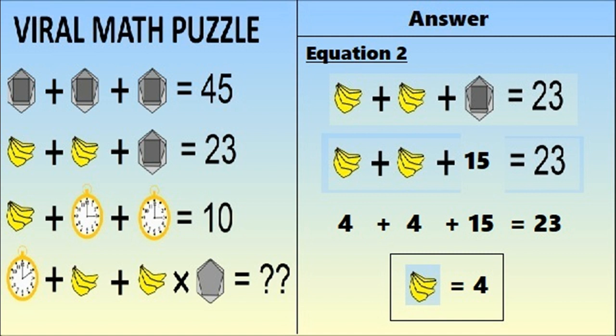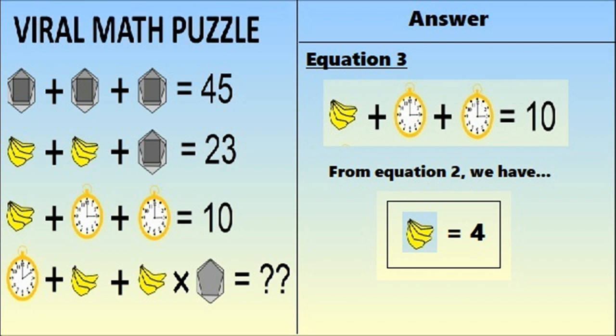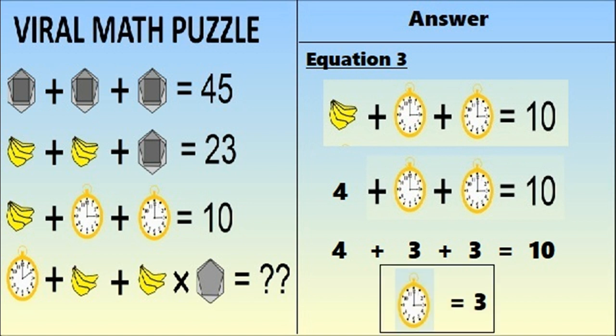Moving on to equation number 3: 4 bananas plus a clock showing time 3 plus a clock showing time 3 equals 10. From equation 2, 4 bananas equals 4. So 4 plus 3 plus 3 equals 10. Therefore a clock showing time 3 equals 3.